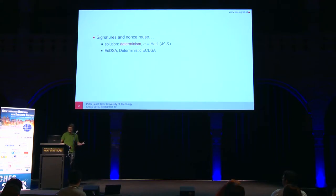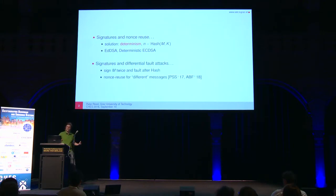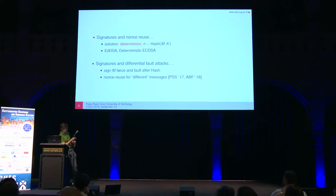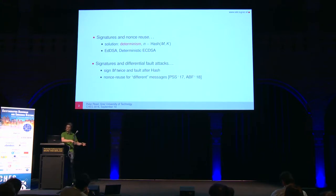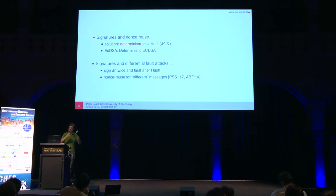This is all nice, but it also opens a problem: differential fault attacks. You sign the same message M twice, which gives you the same nonce since it's deterministic. Then you induce some sort of computational fault after computing this nonce, so you have what looks like a different message — a nonce reuse for a different message — and you can recover the key.